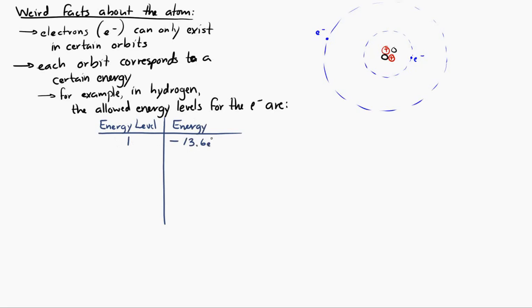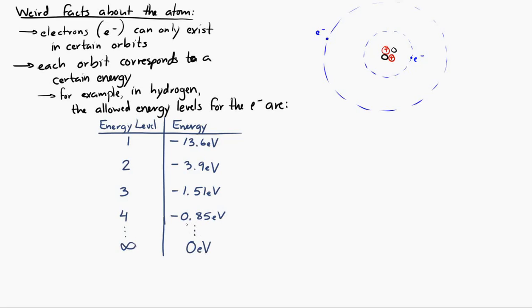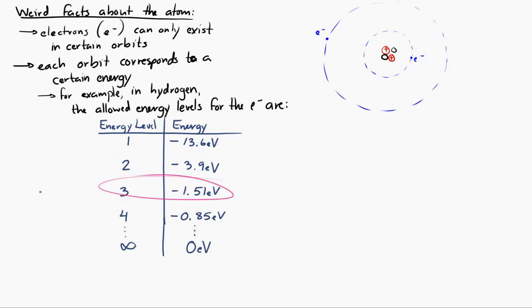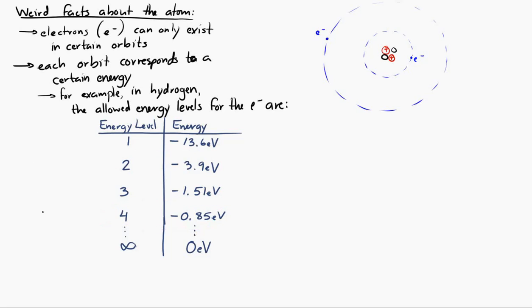The energy levels are named one, two, three, four, and so on. The energy corresponding to each level is known and fixed. Level one corresponds to negative 13.6 electron volts. Energy level two corresponds to negative 3.9 electron volts. Three is negative 1.5 electron volts. Four is negative 0.85 electron volts, and so on. When you get to the energy level infinity, the energy of that electron is zero electron volts.